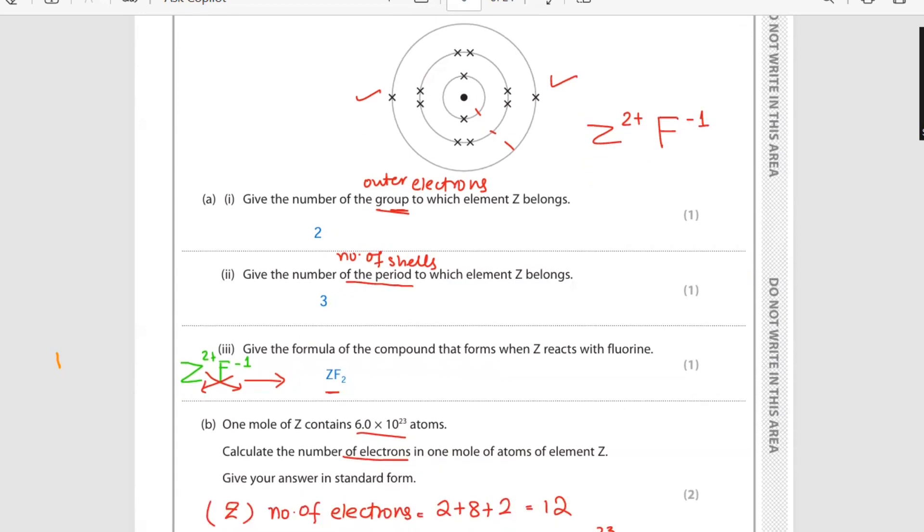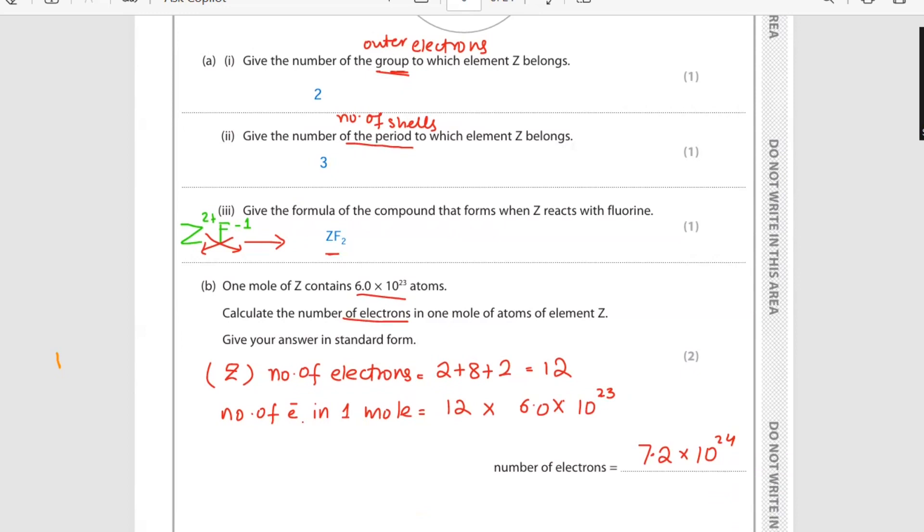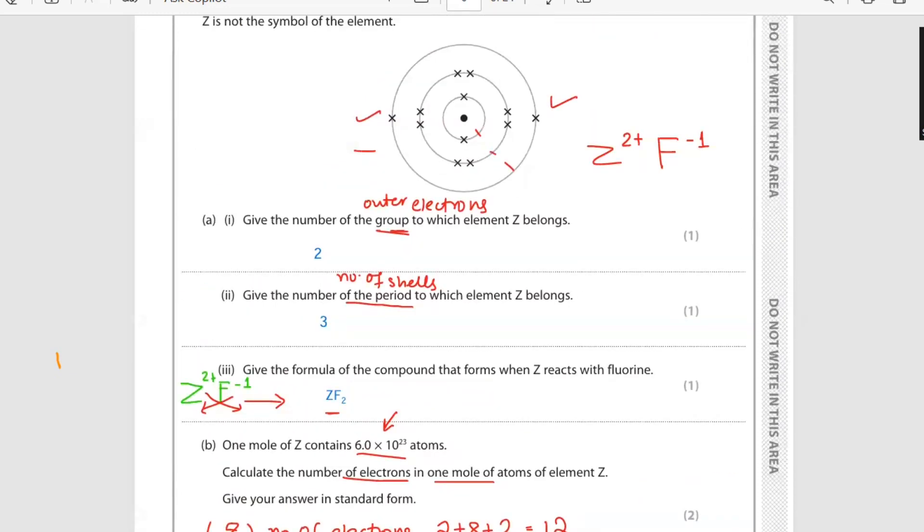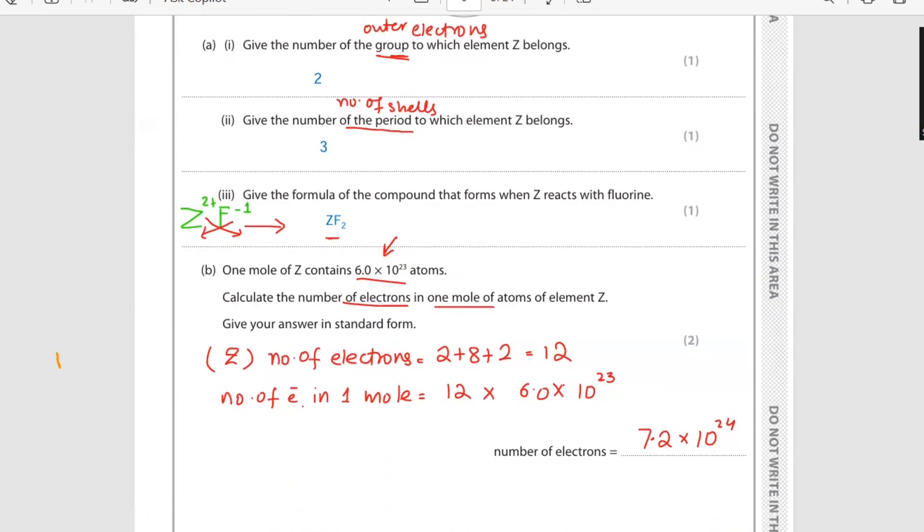One mole of Z contains 6.02 × 10²³ atoms, which is Avogadro constant. Calculate the number of electrons in one mole of atoms of element Z. Give your answer in standard form. Here you can see, count the number of electrons in Z - there are 12 electrons. So there are 12 electrons. Then we will see the number of electrons in one mole. Number of electrons in one mole will be 12 times 6.02 times 10²³. You will get the answer.